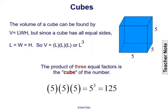So the volume of a cube can be found by multiplying the length times the length times the length. Or since you're multiplying the same thing three times, it's the length to the third. So the product of three equal factors is called the cube of a number because of this relationship with the volume of a cube.